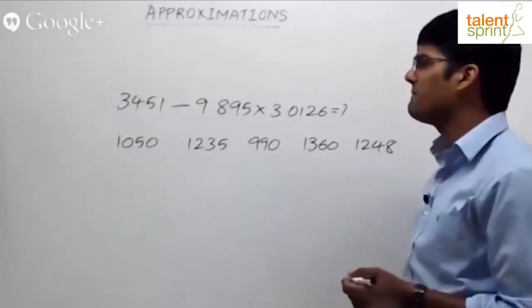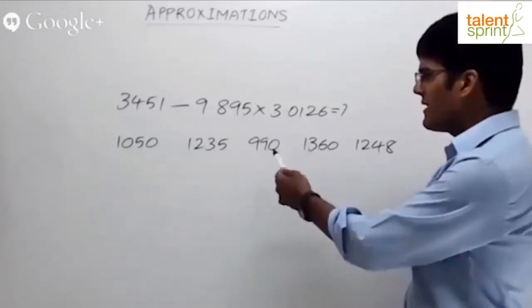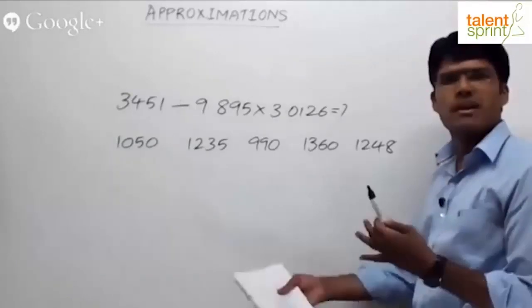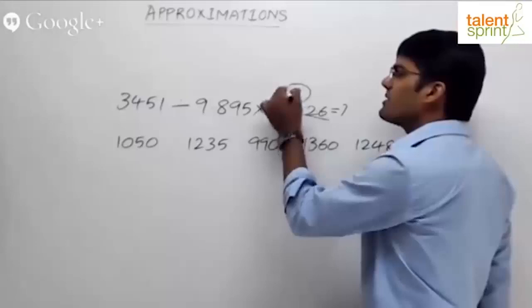3451 divided by 9.895 into 3.0126. The options are 1050, 1235, 900, 1360, 1248, which are not close to each other. So this becomes 3 approximately.